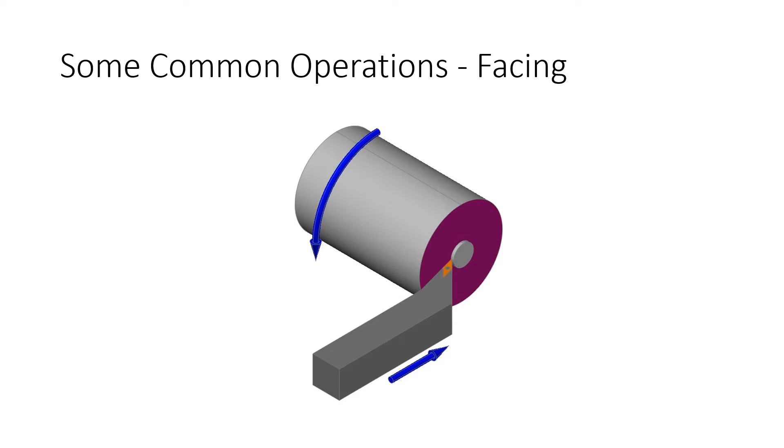Second operation is facing. When you have to face this surface part of the cylinder, when this cylinder is rotating and the tool is moved along this direction perpendicular to the axis, then it provides the cutting of this face.